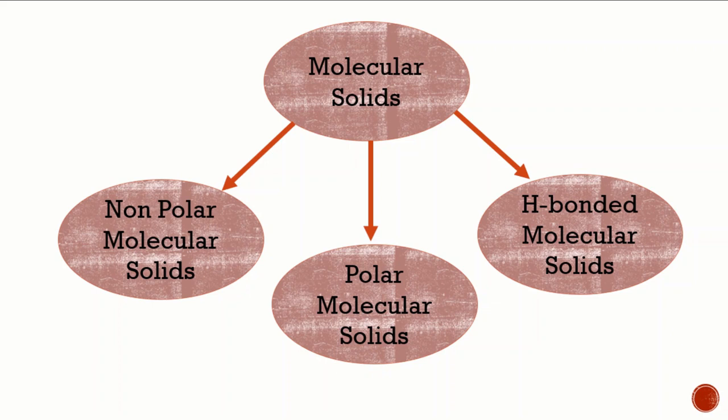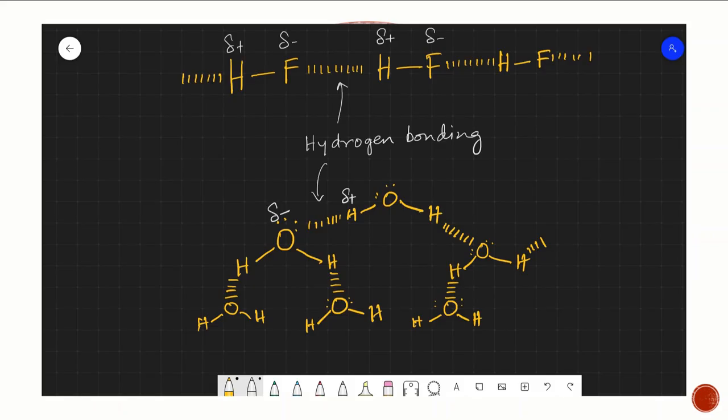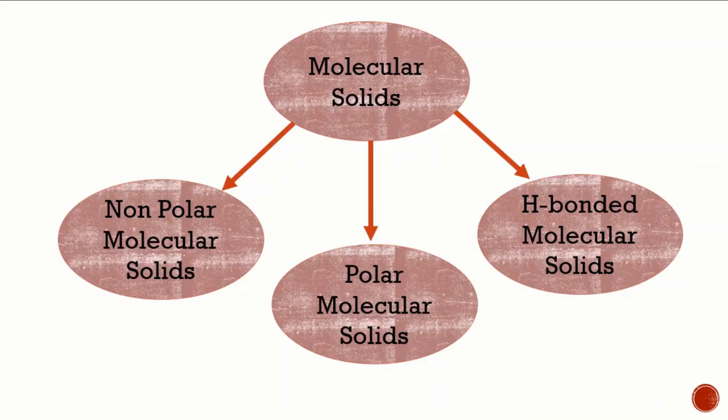In hydrogen-bonded molecular solids, the constituent particles are molecules which contain hydrogen atoms linked to a highly electronegative atom small in size, such as fluorine, oxygen, or nitrogen — for example in water. The intermolecular forces of attraction existing among these molecules are the strong hydrogen bonds. They exist as volatile liquids or soft solids at room temperature and ordinary pressure. They are non-conductors of electricity, and their melting and boiling points are generally higher than those of the first two types of molecular solids.